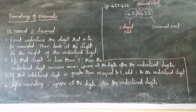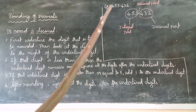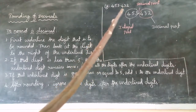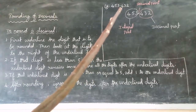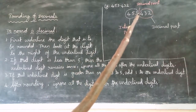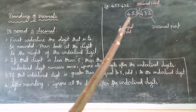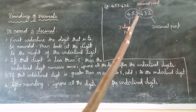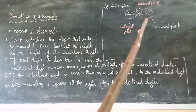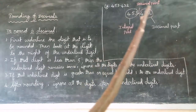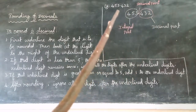Hello students, I am Yudhina Karan sir. In this video we will learn rounding of decimals in number system. Here is an example of a decimal number: 453.432. This is a decimal number. You will have a decimal point. The left side of the decimal point is called the integral part, and the right side is called the decimal part. Altogether, it is a decimal number, also called a fractional number.